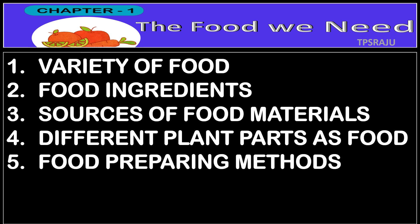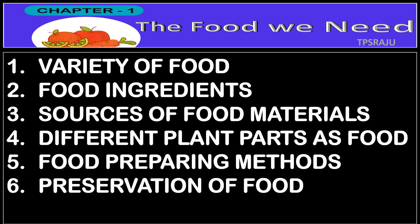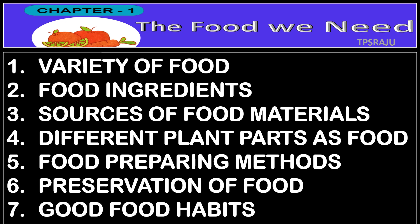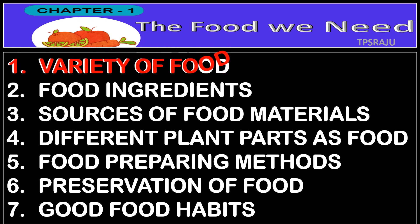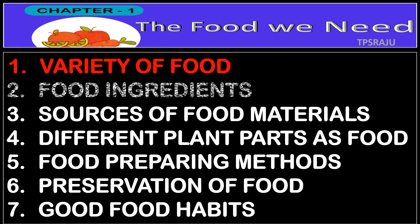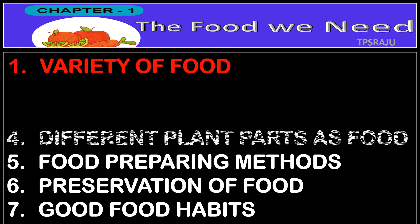Fifth one is food preparing methods. Sixth one is preservation of food. And seventh one is good food habits. Today's topic is variety of food.